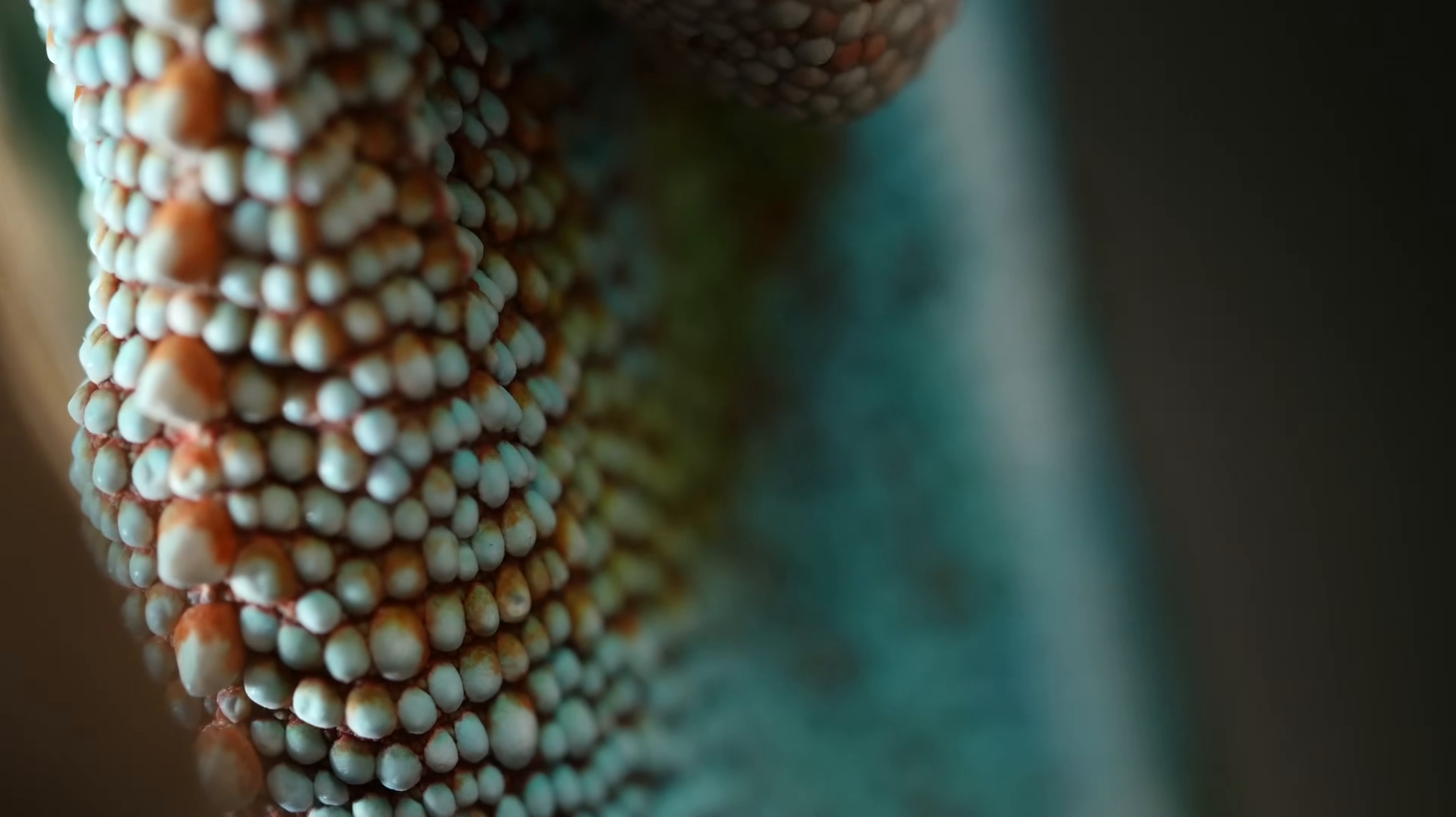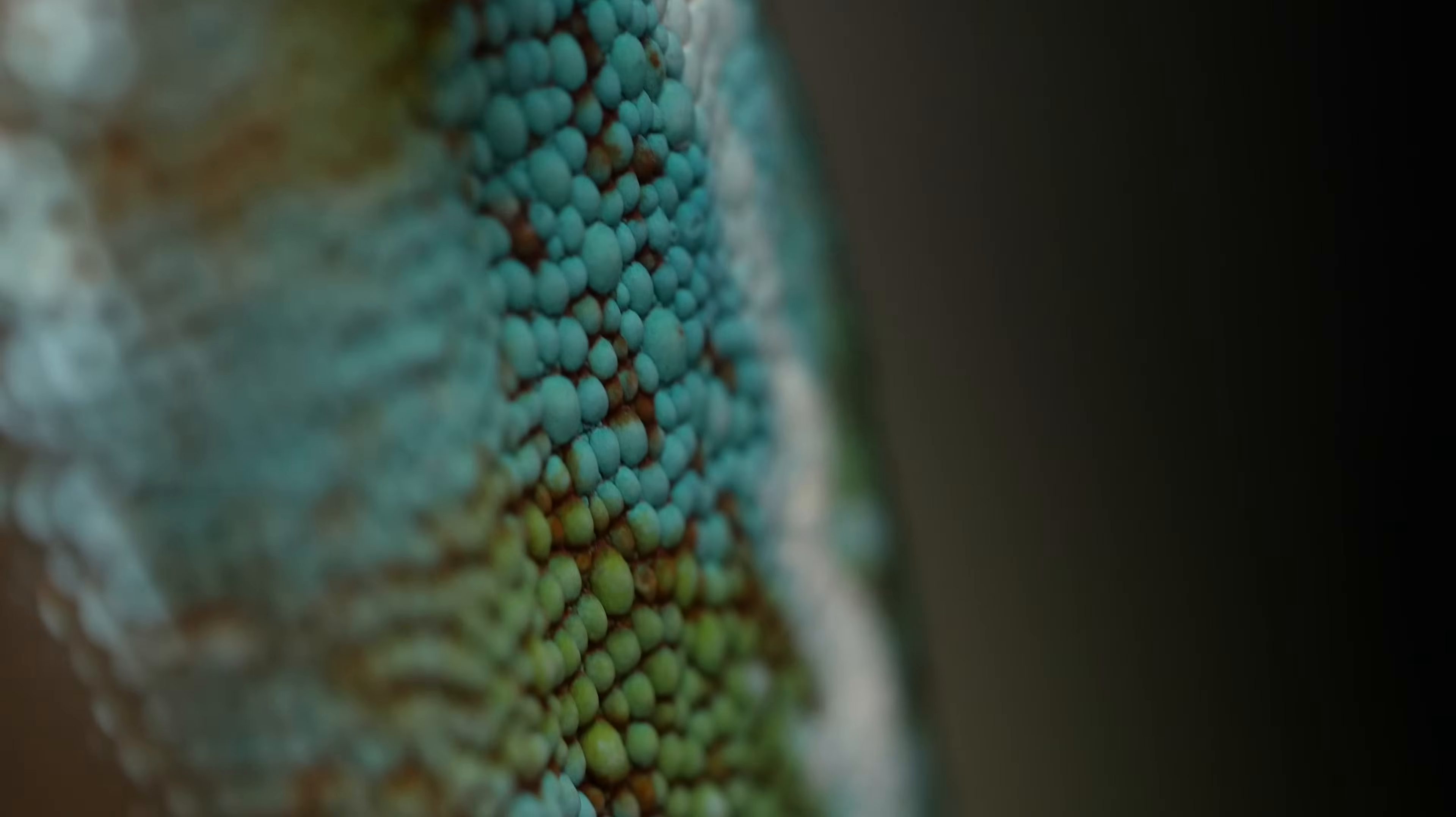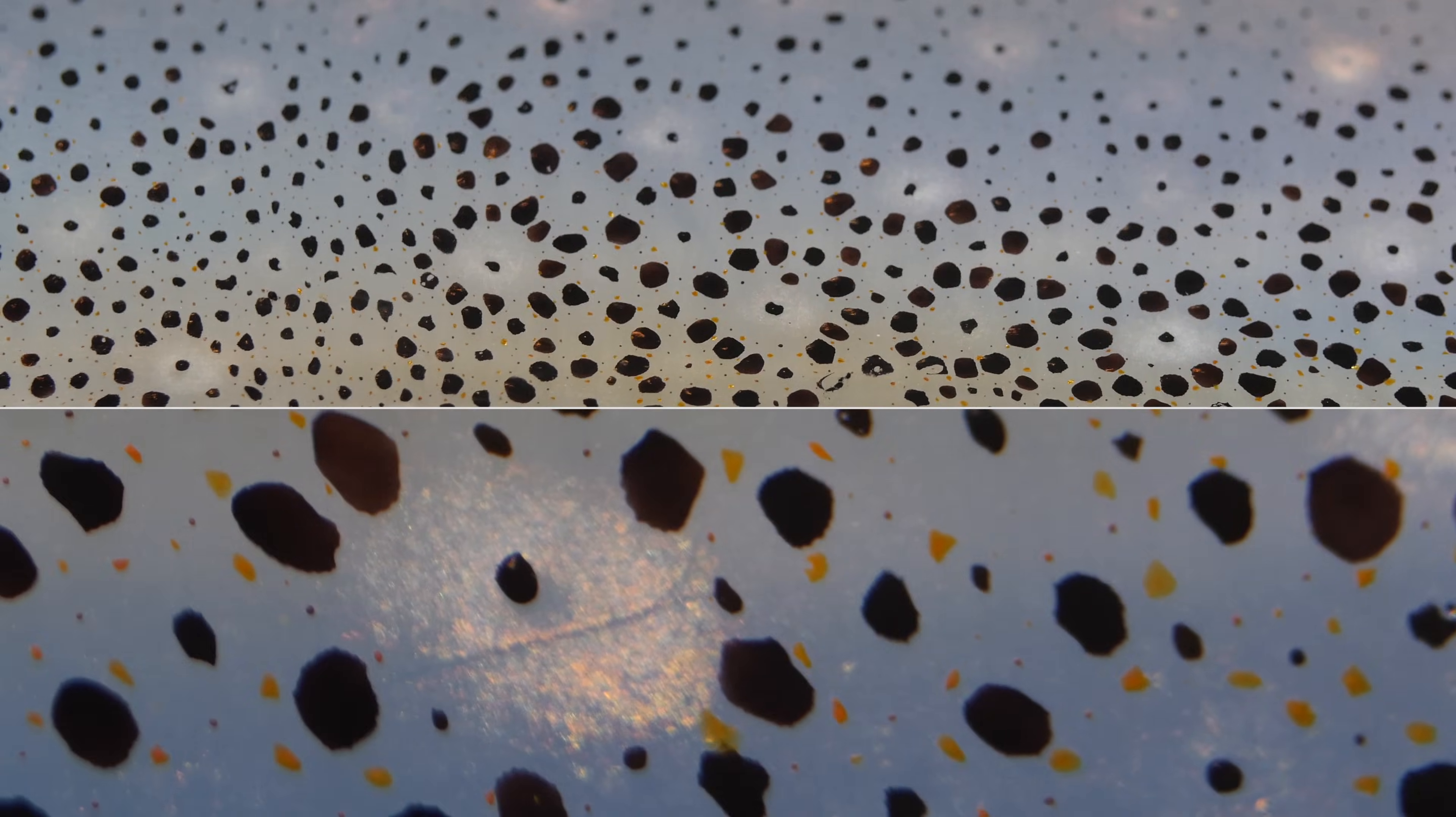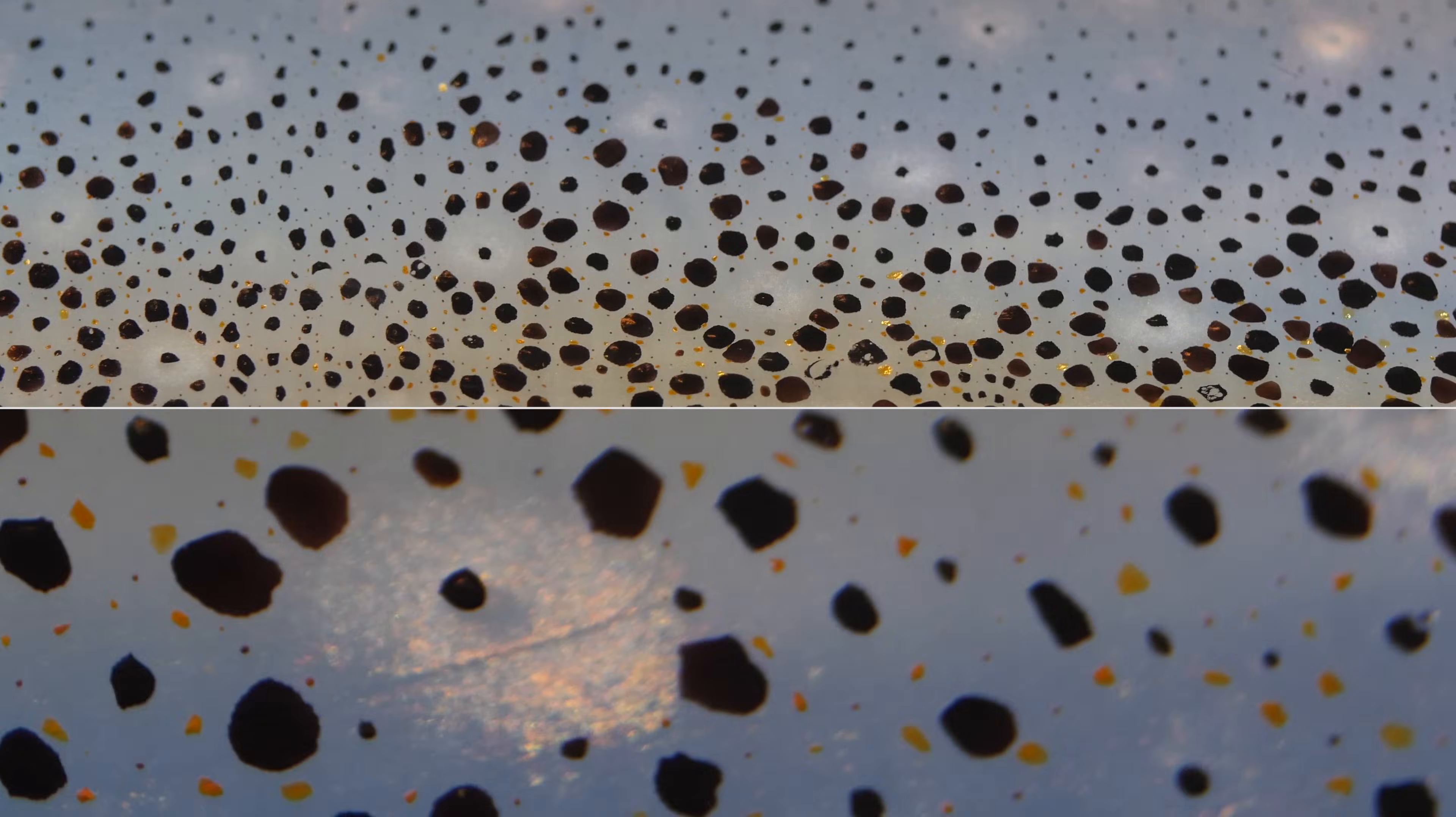How do they do this? Well, it turns out we've been getting that wrong, too. Until this year, scientists thought chameleons change color by spreading out pigments in their cells, like the skin of the squid we're seeing right here. But the truth is way more complex.